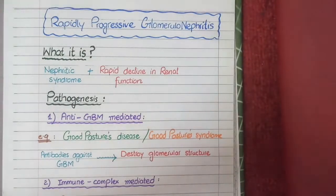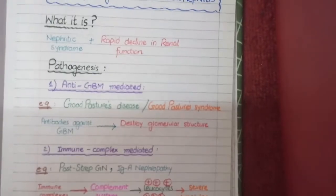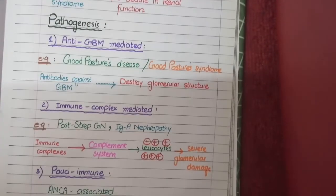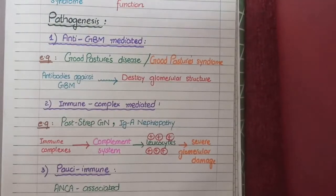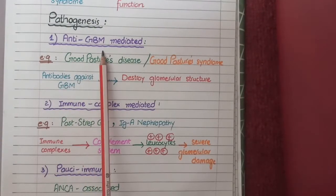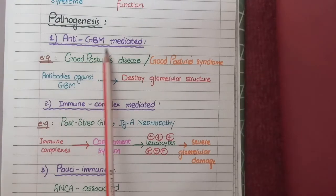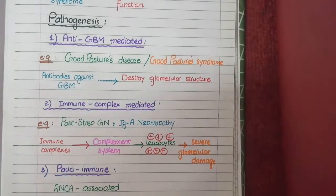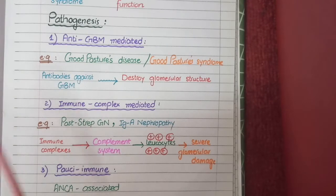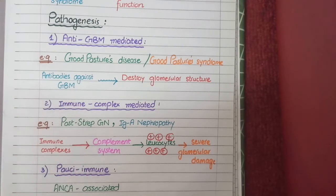Now let's study the pathogenesis of this disease. According to pathogenesis it can be divided into three main categories. The first category is anti-glomerular basement membrane mediated disease. This is a specific and unique disorder in which our immune system develops auto-antibodies against the antigens of the glomerular basement membrane.